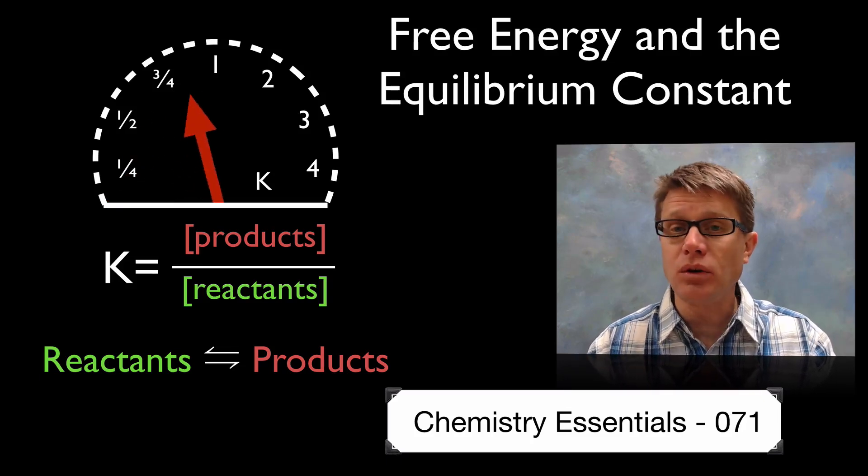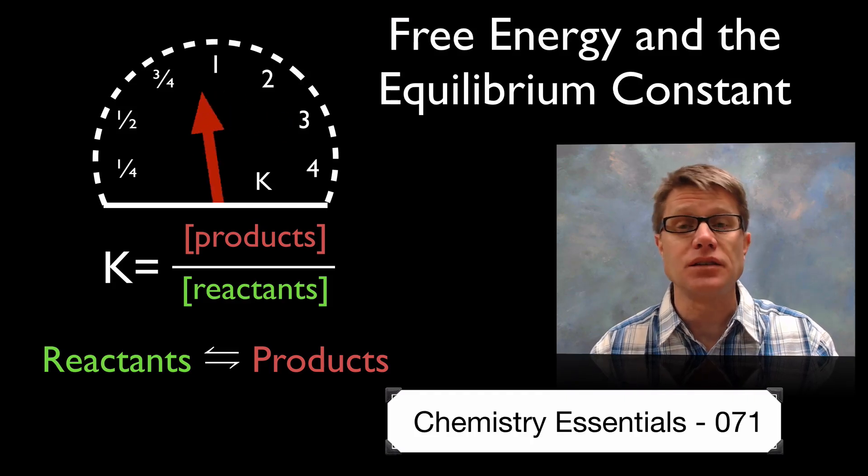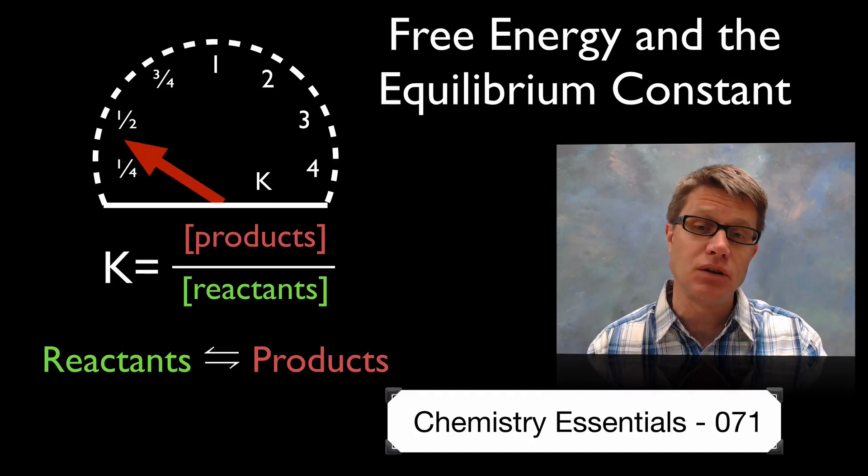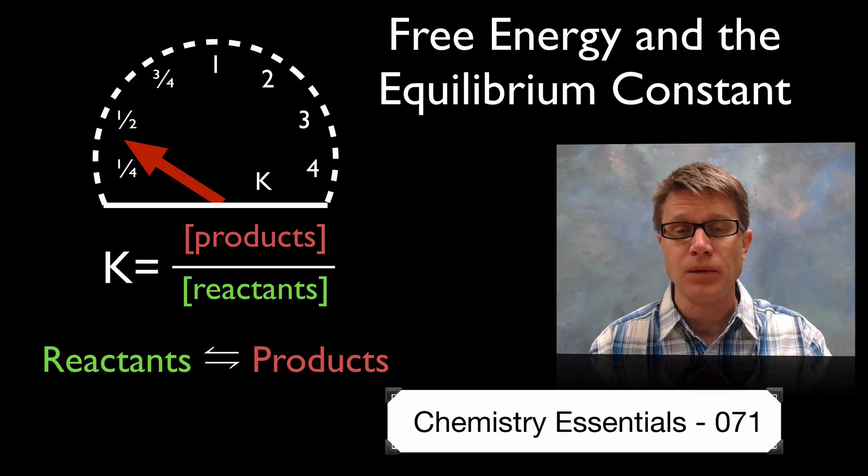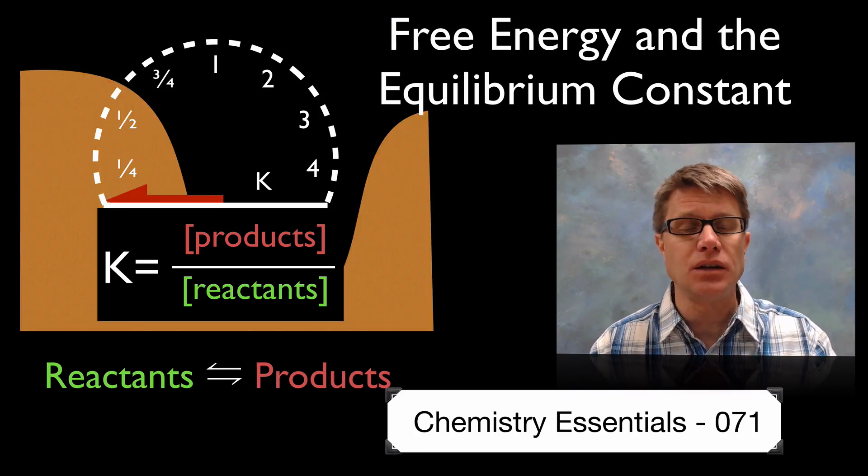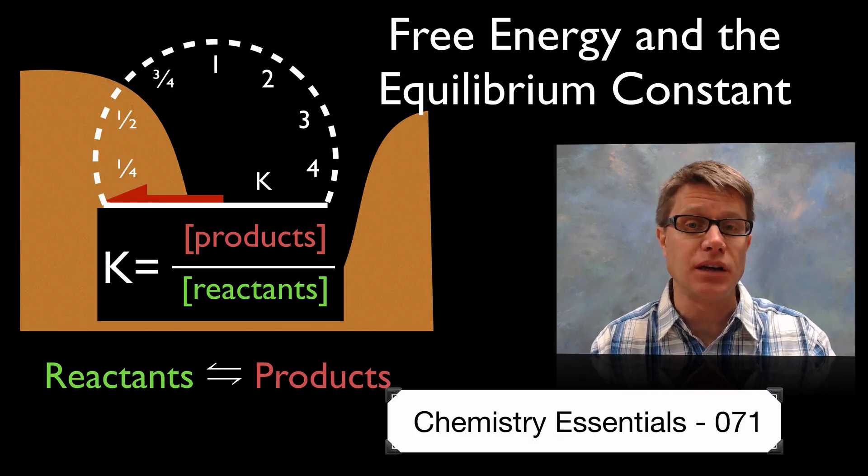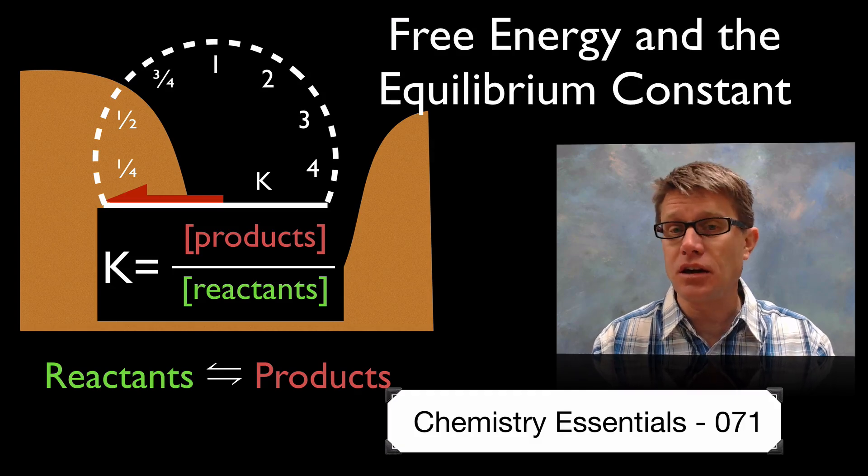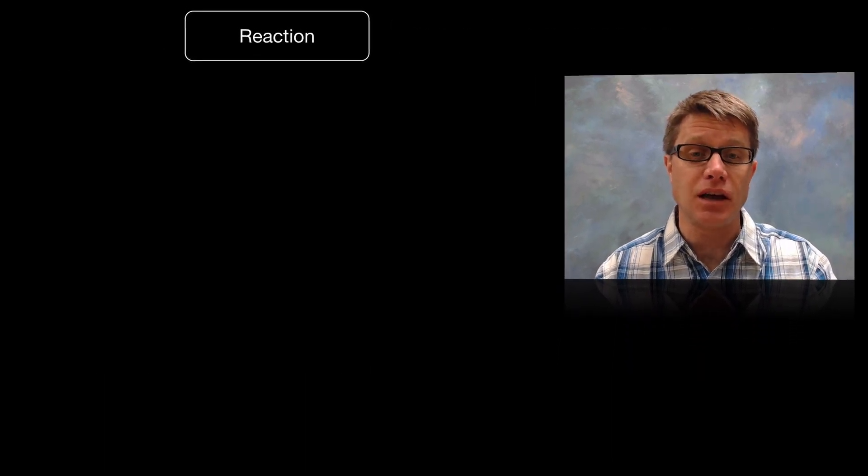As K is equal, so are the reactants and products. As it increases we shift towards the right. As it decreases we shift towards the left. But it's important that you understand that we can interchange these two things: delta G and K, and that they are inherently tied together.